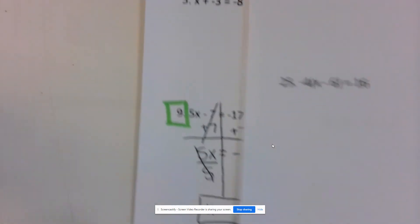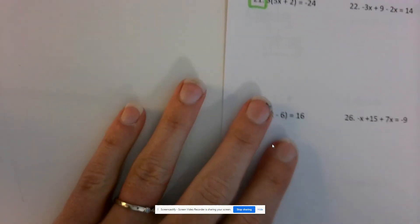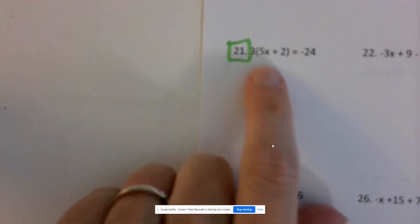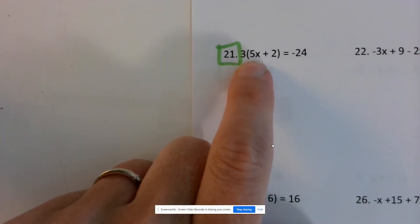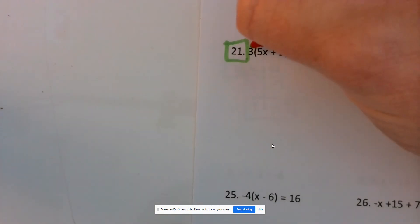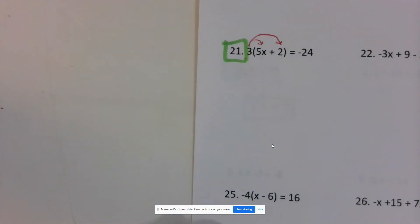Moving on to the back. Number 21 we're going to do together. We're going to solve the equation 3 times the quantity 5x plus 2 equals negative 24. A lot of you remember that when you see parentheses like this and a number out front, we're going to use the distributive property, which is fine.